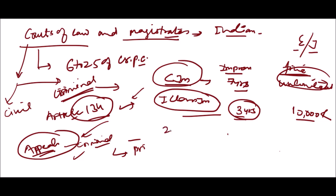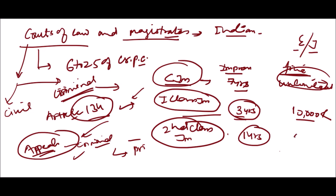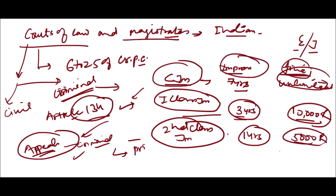The First Class Judicial Magistrate can also impose a fine up to ten thousand rupees. The Second Class Judicial Magistrate can prescribe imprisonment up to one year and a fine up to five thousand rupees. So far we have discussed Supreme Court, High Court, Session Court, and Magistrate Courts - these are the basic structures of courts in our Indian medical-legal system.